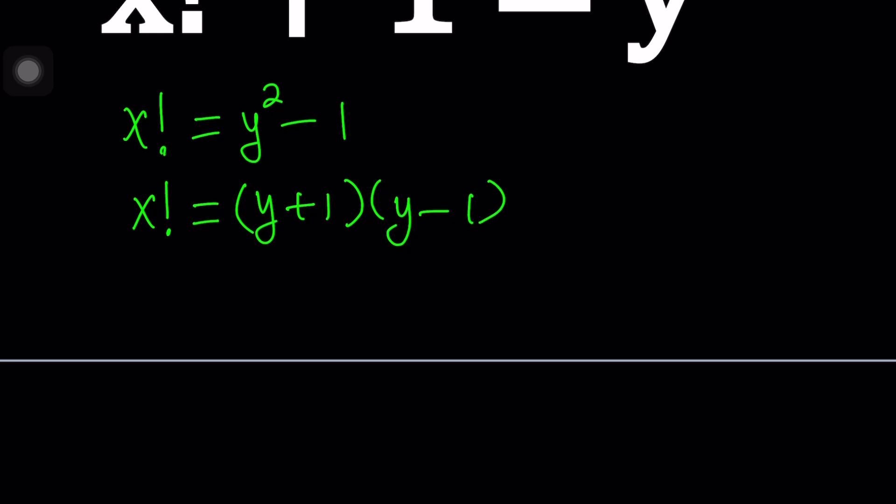So it's like we write x factorial as the product of two consecutive even numbers or odd numbers. They're not consecutive integers because they differ by two.